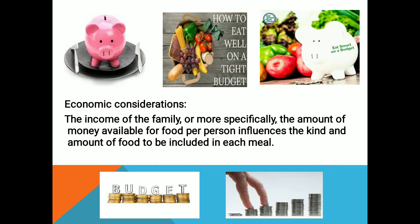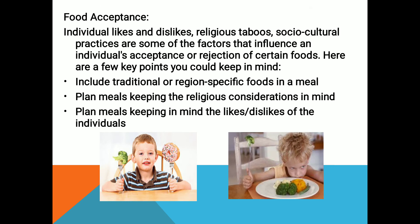Third factor is economic considerations. Jaisa ki hum sab jaante hain that a family has a definite income and out of that income there is a particular food budget, so our focus is to incorporate meals which are smart and nutritious but do not disturb the financial considerations of the family. Iska matlab hai ki saste aur poshtik foods ko include karna taaki hamare food budget par koi bhar na pade. That doesn't mean ki hum nutrition level ko ignore karein — nutritional level ko main importance deni hai — but compare karna hai ki kaun sa food cost-wise effective hai, usi ko apni diet mein include karna hai.